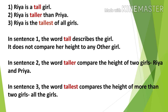Now let's read these sentences: 'Ria is a tall girl.' 'Ria is taller than Priya.' 'Ria is the tallest of all girls.' The words tall, taller, and tallest are highlighted. In sentence one, 'tall' simply describes Ria without comparison. In sentence two, 'taller' compares the height of two girls — Ria and Priya. In sentence three, 'tallest' compares the height of more than two girls.